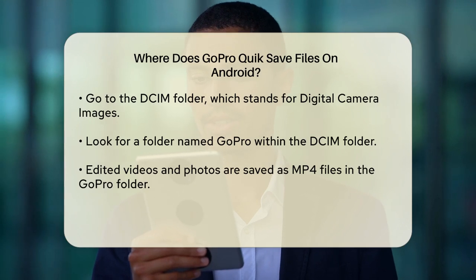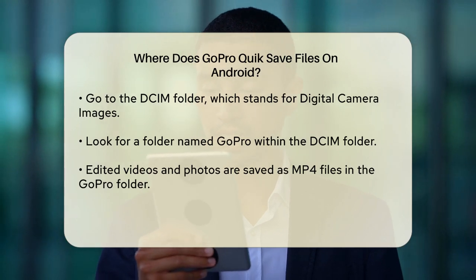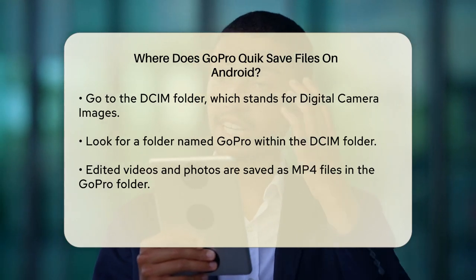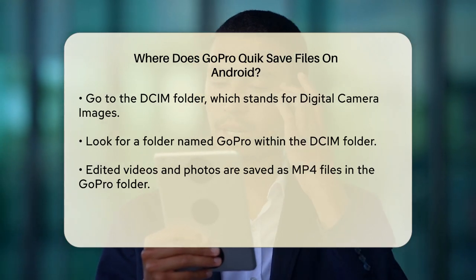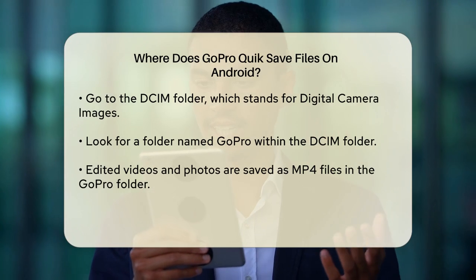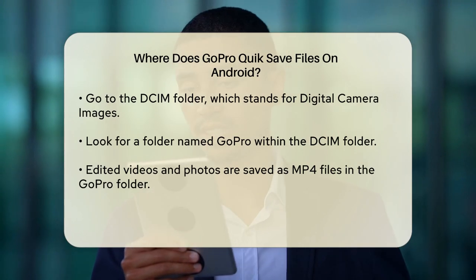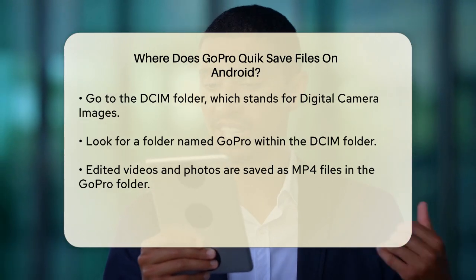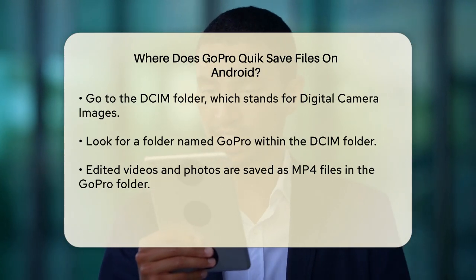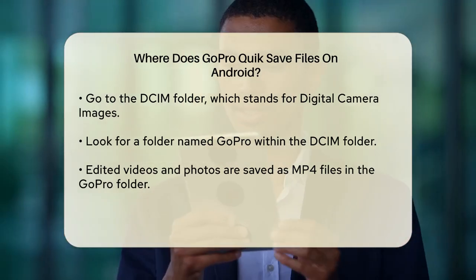So the path looks like this: Internal Storage > DCIM > GoPro. Here you'll find your saved files as MP4 files, ready for viewing or sharing.